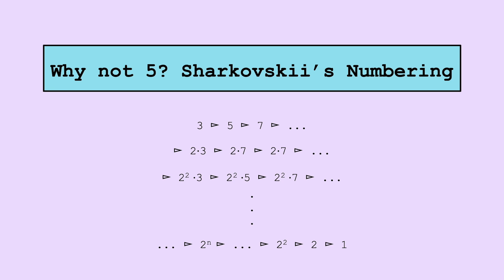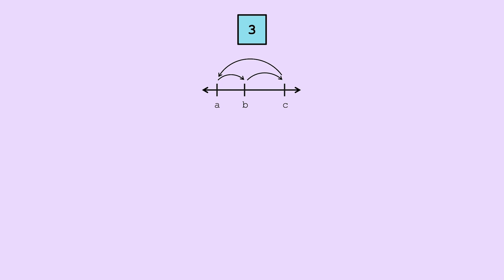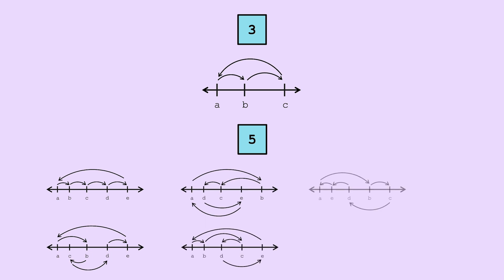If you're like me, you probably have many questions at this point, like, what is special about 3? Does period 5 imply all periods? And if you look carefully back at our proof, the problem is we can't order 5 elements the same way. We can't say a less than b less than c for period 5. There are many possible orderings. And the same is true for all numbers besides 3.